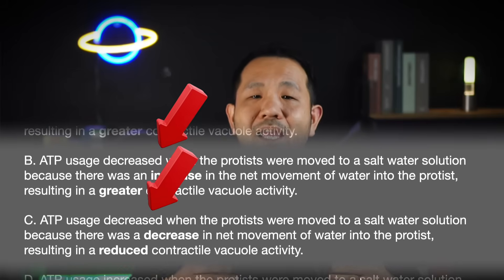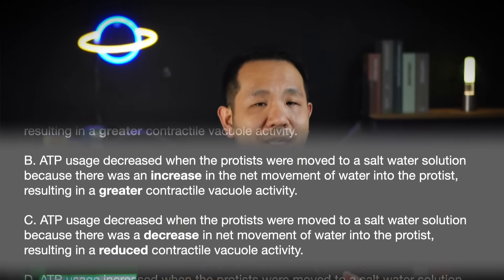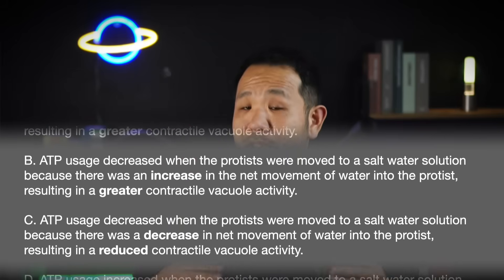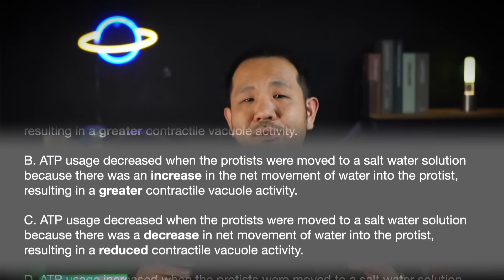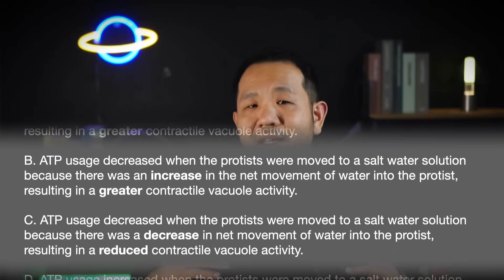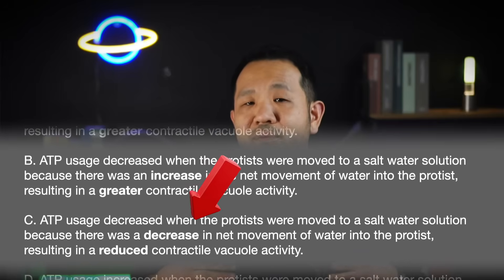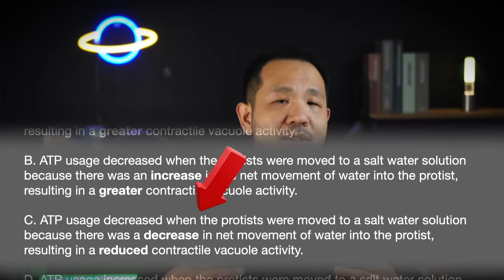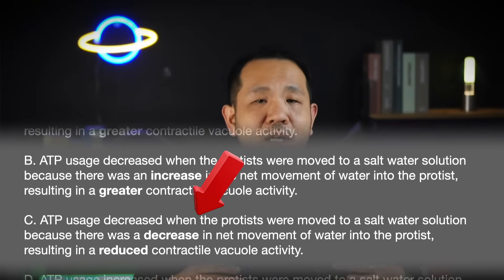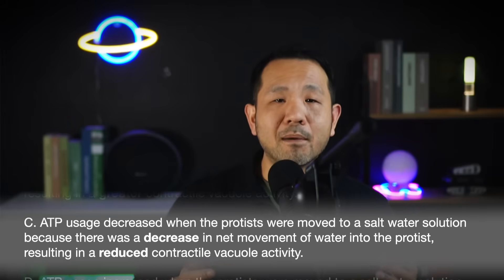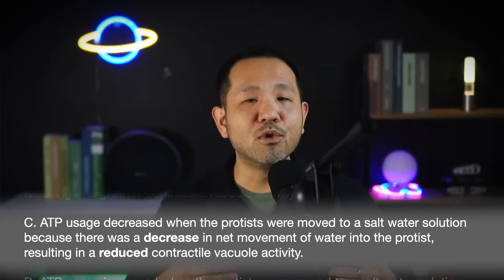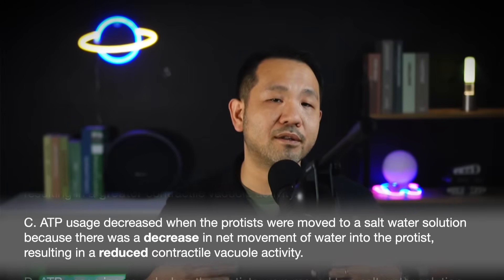By figuring out this path of reasoning, the initial direction we want is ATP usage decreasing. This means A and D are instantly eliminated. Now the rationale is the second step. If the protist is in a more isotonic solution than before, we should expect a decreasing movement of water into the cell as the two solute concentrations become closer together — meaning a decrease in the net movement of water into the cell. This is a very common pattern, so make sure you solve these questions the easy way.